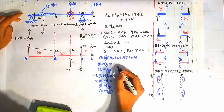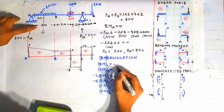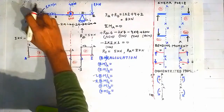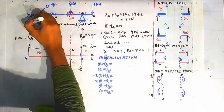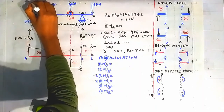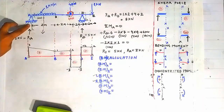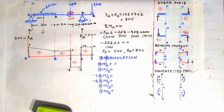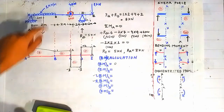For bending moment at point A, we construct a section through point A directly. Looking on the left side of this section, nothing is present, so the bending moment at point A is zero.